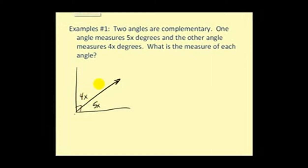And for these examples, I'll leave the units off until the end. So if they're complementary, we'd have 4x plus 5x equals 90. So when we solve this equation, we have 9x equals 90, dividing both sides by 9. We can see x is equal to 10.